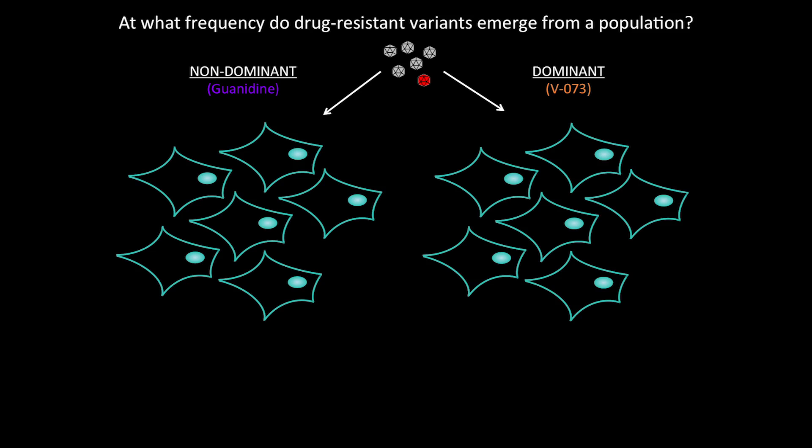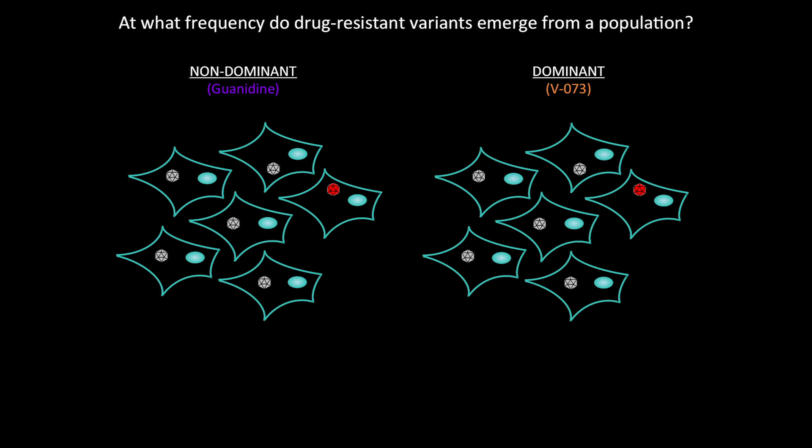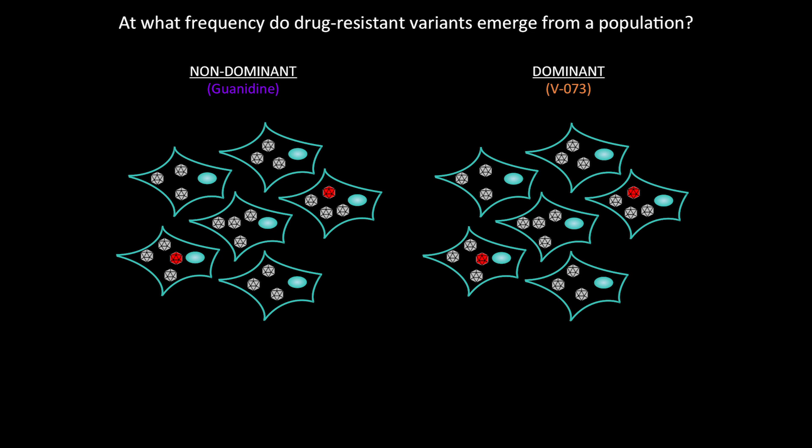We could test the requirement for co-infection more explicitly with what is literally my favorite piece of data. A stock of wild type poliovirus in the lab is incredibly heterogeneous — drug resistant variants are already pre-existing. If I infect at a low MOI of one, resistant variants get into cells by themselves. In the presence of drug, those variants grow out regardless of whether it's a dominant or non-dominant target. But if I infect at a high MOI, for a non-dominant drug target it doesn't matter — resistant variants still grow out. But for a dominant drug target, susceptible variants are now in the cell with the resistant one and should inhibit its growth, so I should see a difference at high MOI.